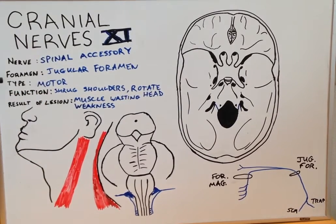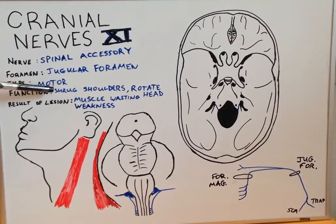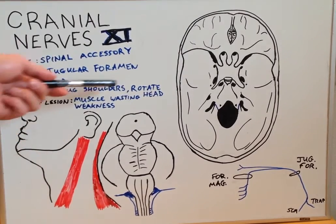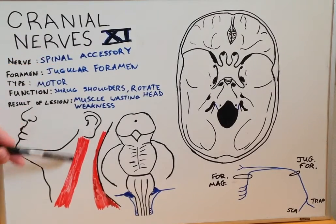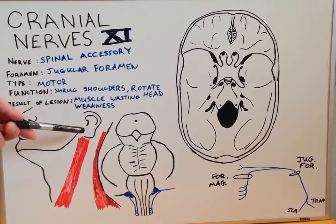The type of fibers which cranial nerve 11 has are motor fibers, and its function is to shrug the shoulders with the trapezius muscle, as well as rotate the head with the sternocleidomastoid muscle.